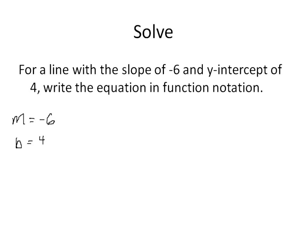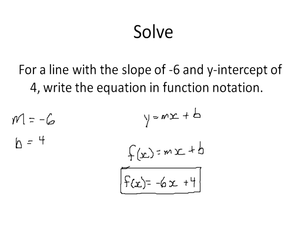Write the equation in function notation. So basically instead of writing it as y equals mx plus b, I'm going to write it as the function of x is equal to mx plus b. Now I know my slope is negative 6, so I'm going to substitute that in where I have the letter m, and my y intercept is positive 4.